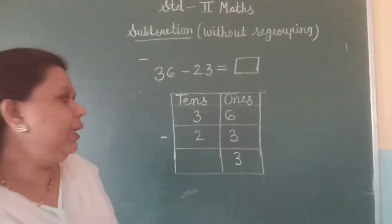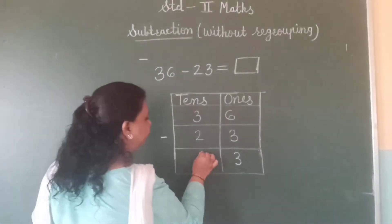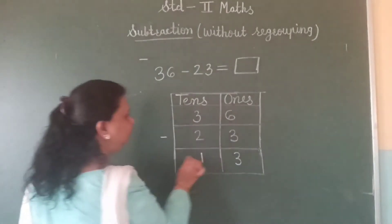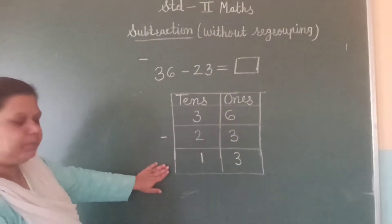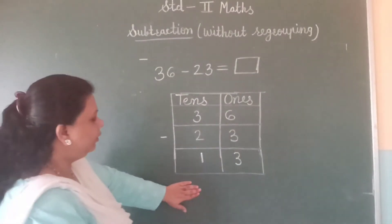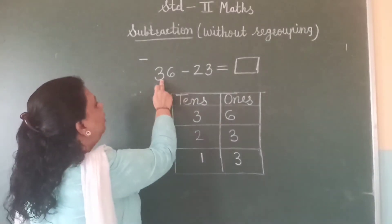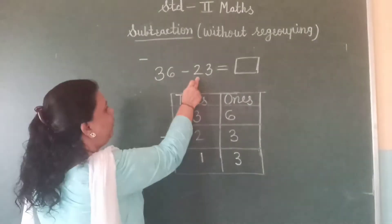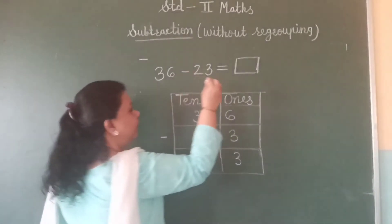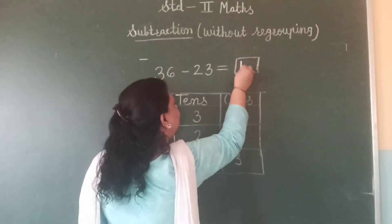So, the answer is one. We got the number thirteen. Means, thirty-six minus twenty-three is equal to thirteen.